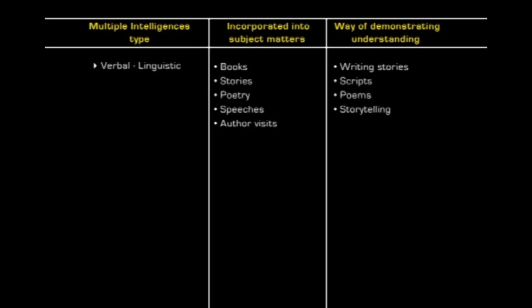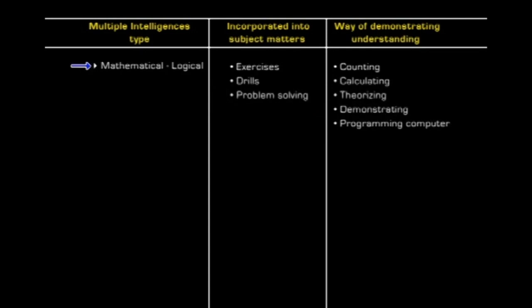Now we will see some examples of teaching activities and materials that can be used with these eight intelligences. For verbal-linguistic intelligence incorporated into subject matter: stories, poetry, speeches, and author visits. Ways of demonstrating or understanding include writing stories, poetry, speeches, scripts, poems, and storytelling. For mathematical-logical intelligence: exercises, drills, problem solving, counting, calculating, theorizing, demonstrating, programming, and computers.